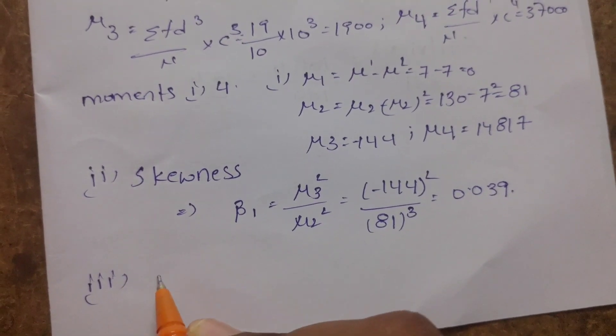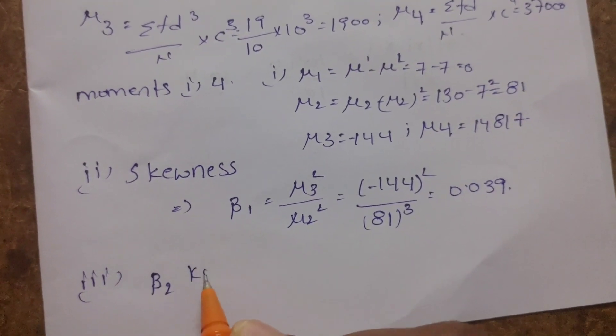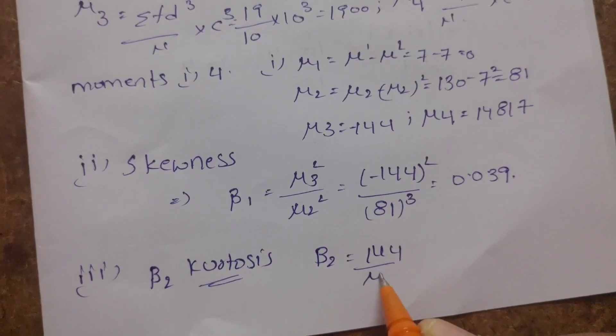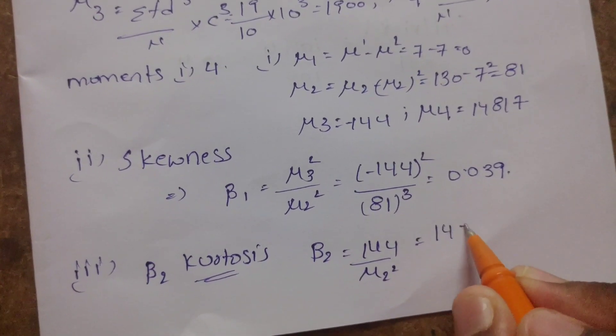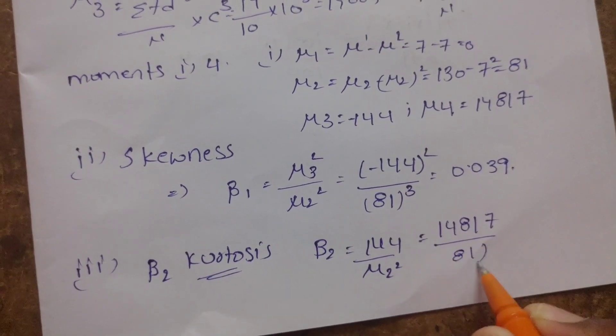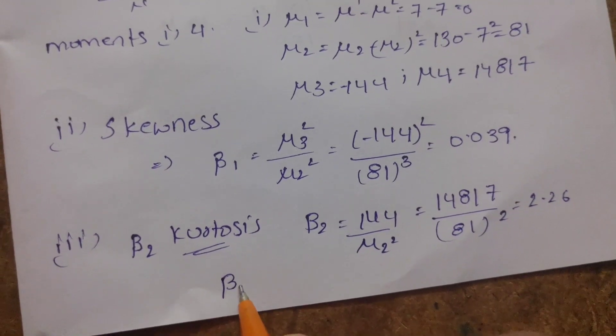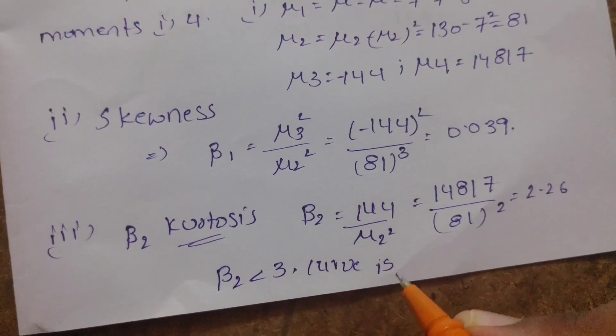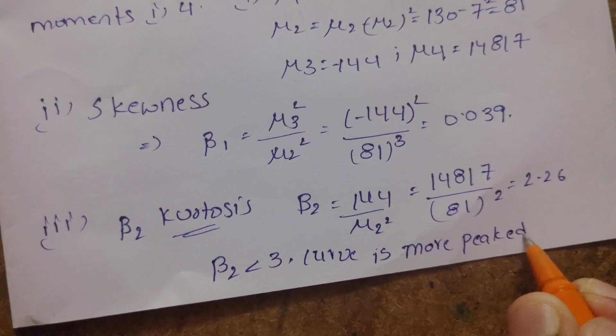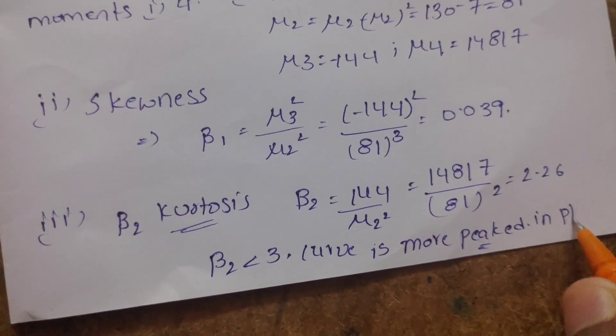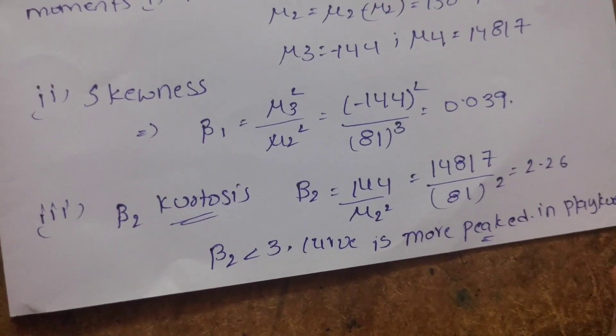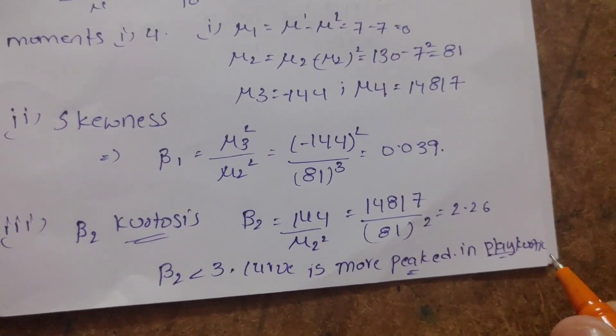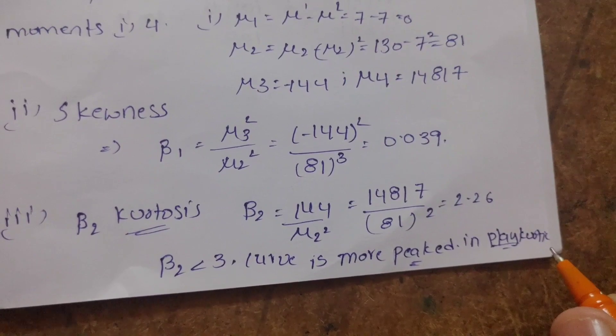For kurtosis, beta 2 equals mu4 by mu2 squared. That equals 14817 by 81 squared, which equals 2.26. Beta 2 greater than 3 indicates leptokurtic, beta 2 less than 3 indicates platykurtic. Since our value is 2.26, this is platykurtic. That's it for this video. If you liked it, try to like, share, and subscribe to the channel. Thank you so much for watching and for your support.